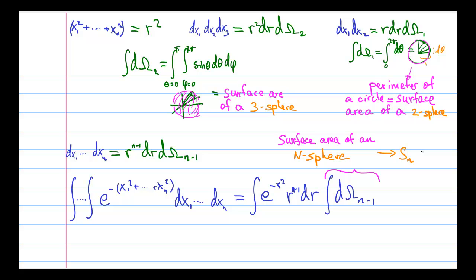So now let's look at the radial integral. The radial integral looks very similar to what we had in two-dimensions and then three-dimensions. In two-dimensions we had e to the minus r squared times r dr. In three-dimensions we had e to the minus r squared r squared dr.